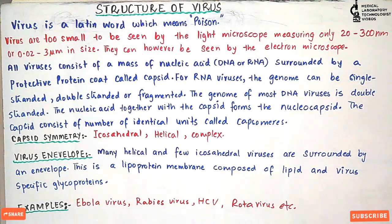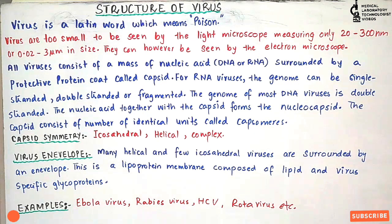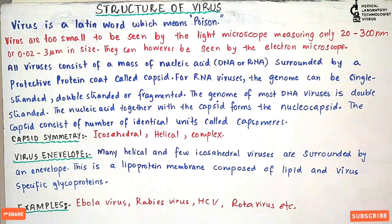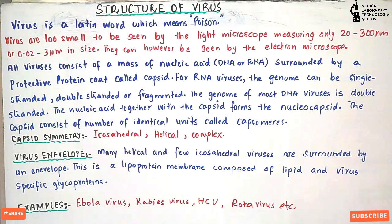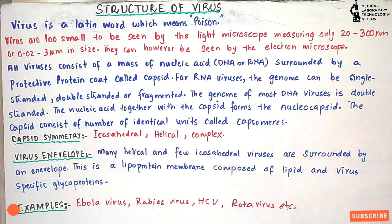Capsid symmetry can be either icosahedral, helical, or complex. In icosahedral symmetry, capsomeres are arranged to form a symmetrical icosahedral shape surrounding the nucleic acid. These icosahedral viruses are smaller — around 50 nanometers — and appear spherical.